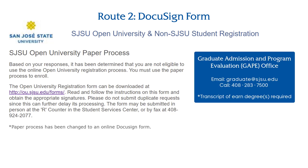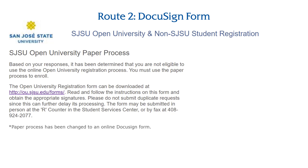If you are a graduate student seeking a graduate level class, you must have approval from the Graduate Admission and Program Evaluation Office, also known as GAAPE. You can email GAAPE with your intent to enroll in a 200-level class. Please note that you will be required to send a transcript of your earned degrees to GAAPE and the Registrar's Office. To submit an online DocuSign registration form, continue to the next part of the tutorial series.